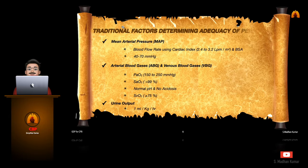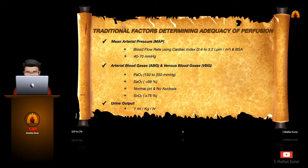We all determine the adequacy of perfusion traditionally using mean arterial blood pressure, the values of arterial blood gases and venous blood gases, and the urine output. The parameters are shown over there.